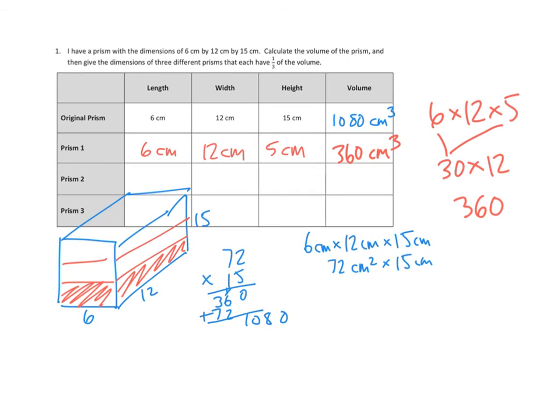And I'm not 100% sure, but I bet that's a third. If we did 360 times 3, 3 times 0 is 0, 3 times 6 is 18, 3 times 3 is 9 plus one more is 10. Sure enough, there we go.